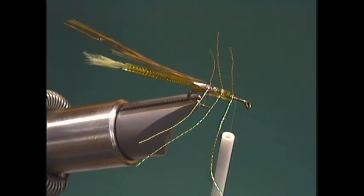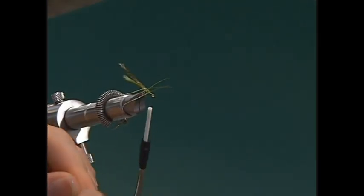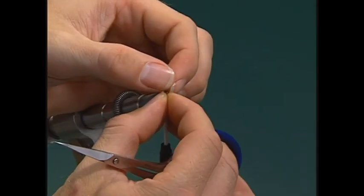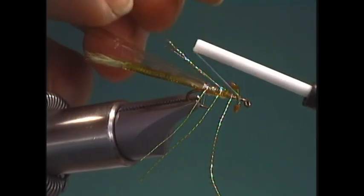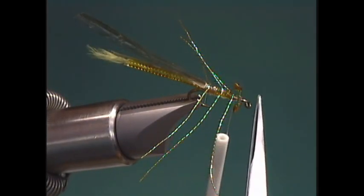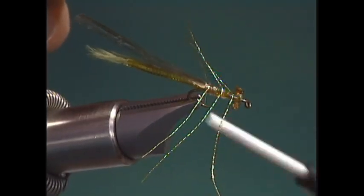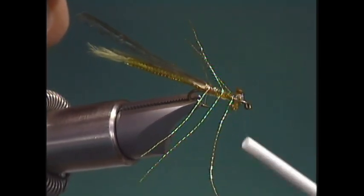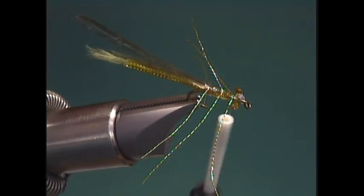Then we're ready to tie in our eyes. We'll pick up our eyes here. We're going to start tying these in right in front of the legs. We want to leave enough room between where we tie in the eyes and the eye of the hook so we have enough room to tie our wing case down. We'll take several more turns, just kind of build it up a little bit. Then we'll end up with our thread right behind the eyes.